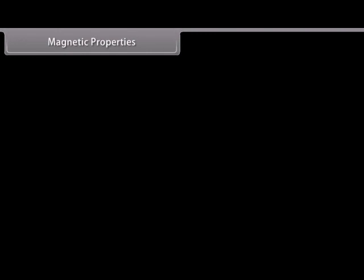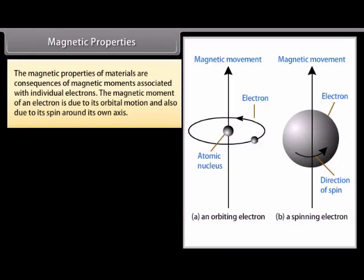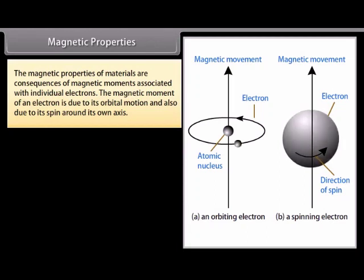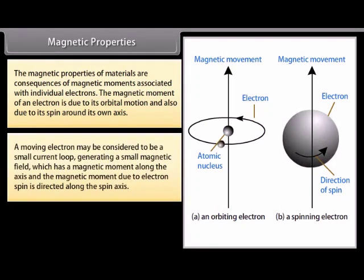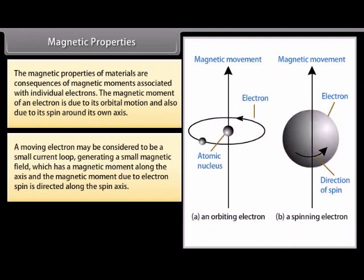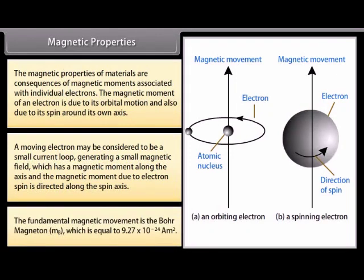Magnetic properties: The magnetic properties of materials are consequences of magnetic moments associated with individual electrons. The magnetic moment of an electron is due to its orbital motion and also due to its spin around its own axis. A moving electron may be considered a small current loop generating a small magnetic field with a magnetic moment along the axis. The magnetic moment due to electron spin is directed along the spin axis. The fundamental magnetic moment is the Bohr magneton, M_B, which equals 9.27 × 10⁻²⁴ A·m².